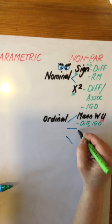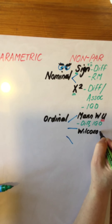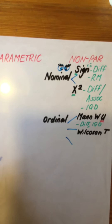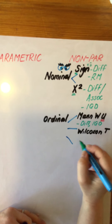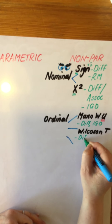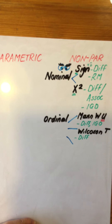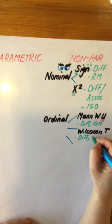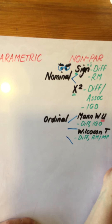If we don't use independent groups design, then we need to use Wilcoxon T. This is what we use when we are once again looking at a test of difference — for example, is there a difference between how we perform in a psychology quiz if we are in a noisy room rather than a quiet room? A test of difference between those two scores, but this time with a repeated measures design or matched pairs.